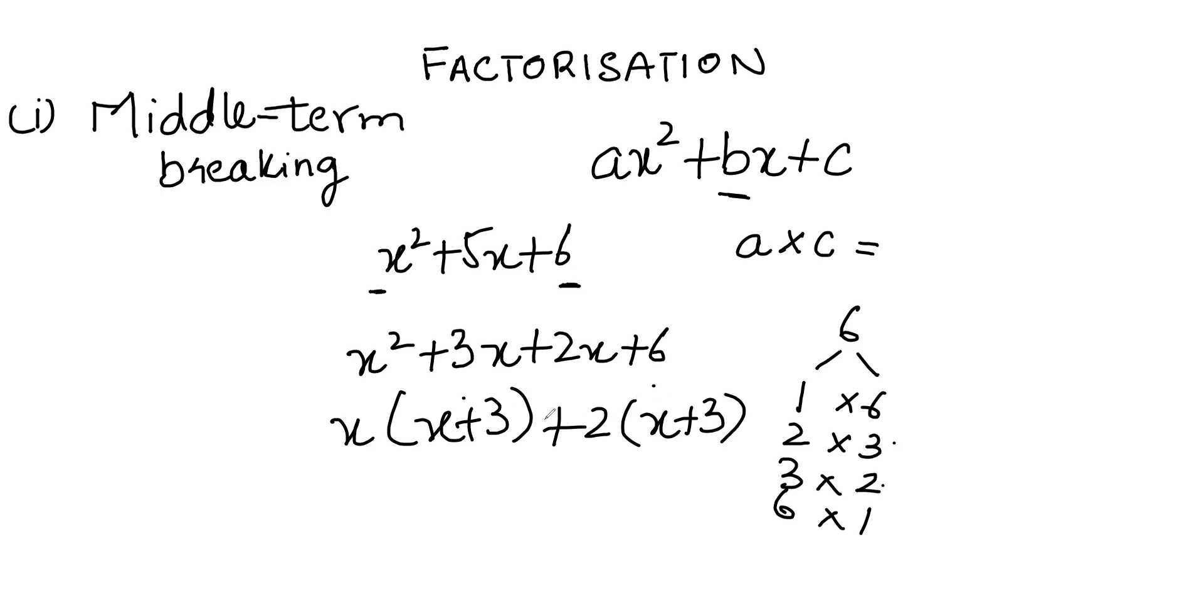In the next step, we take out the common factors again, and it becomes (x + 2)(x + 3). So we have factorized x² + 5x + 6 into (x + 2)(x + 3). Thank you.